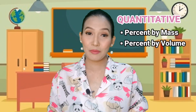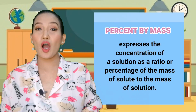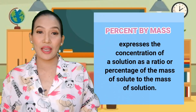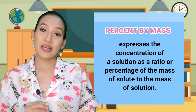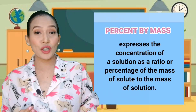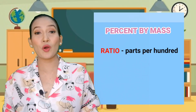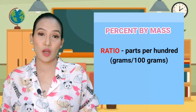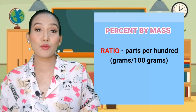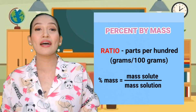In a quantitative way of expressing the concentration of solution, there are two ways: getting the percent by mass and percent by volume. Percent by mass expresses the concentration of a solution as a ratio or percentage of the mass of solute to the mass of the solution — parts per hundred, or grams per 100 grams of solution. The percent by mass can be calculated through the equation: percent by mass equals mass of solute divided by mass of solution times 100.